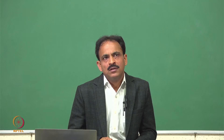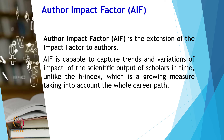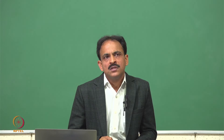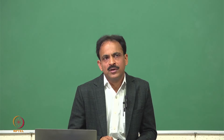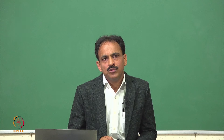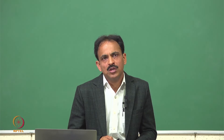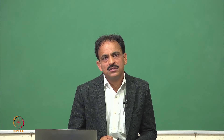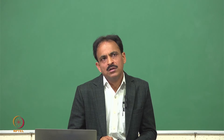Author impact factor is the extension of impact factor to authors. It is capable of capturing trends and variations of the impact of scholarly output of researchers over time. For example, to calculate the author impact factor for 2023, you take citations in 2023 to articles published in 2022 and 2021 and divide by the total number of articles published in 2022 and 2021. Using this formula you can find the author impact factor.